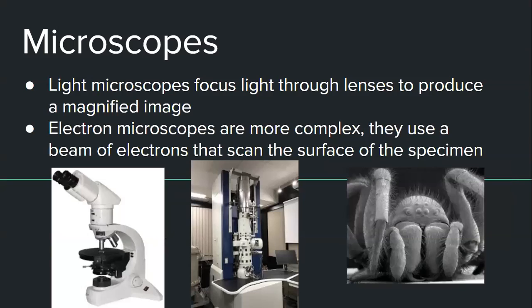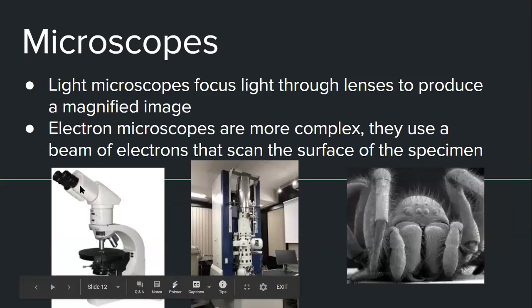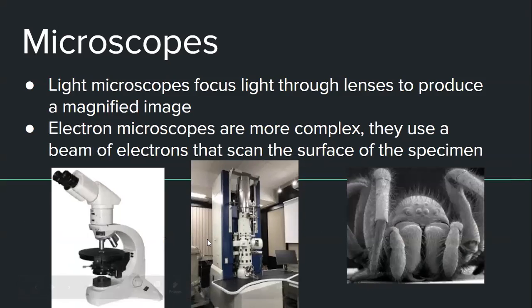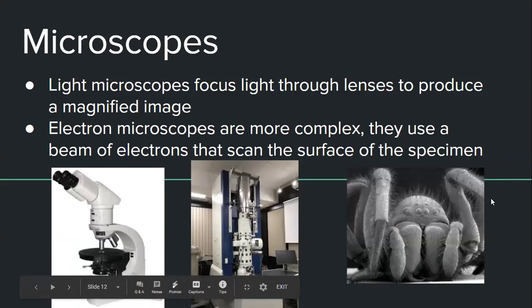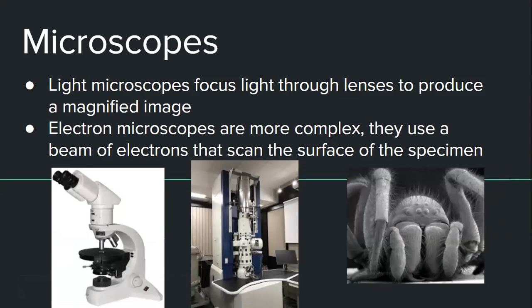So light microscopes focus light through lenses to produce a magnified image. Electron microscopes are a lot more complex. To create the image, an electron microscope uses beams of electrons that scan the surface of the specimen. So if we are looking at it, this would be an electron microscope right here. Now this one is going to be our light microscope and this is our electron microscope. These are going to be a lot more complex. Now if you see right over here, as you can see, it is a spider, but it's extremely close up. So we can see all the little hairs on it, we can see the legs very clearly, the mouth up here. So it just allows you to see things extremely close up. So both types of microscopes do the same job, just in different ways. They both rely on two main factors, though, on magnification and resolution.